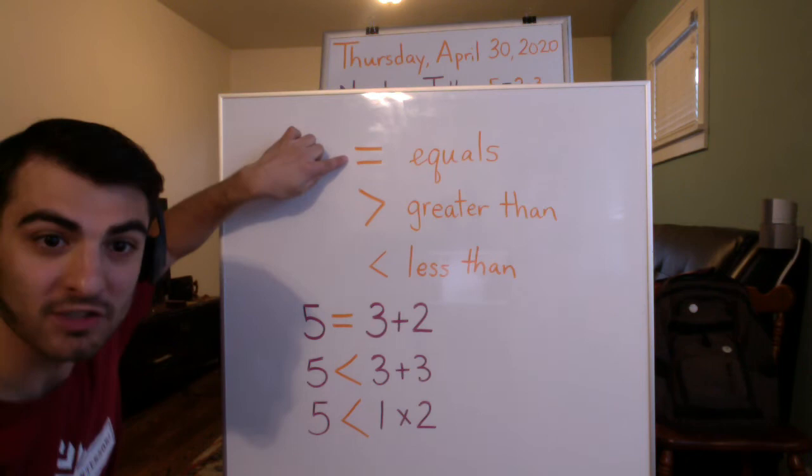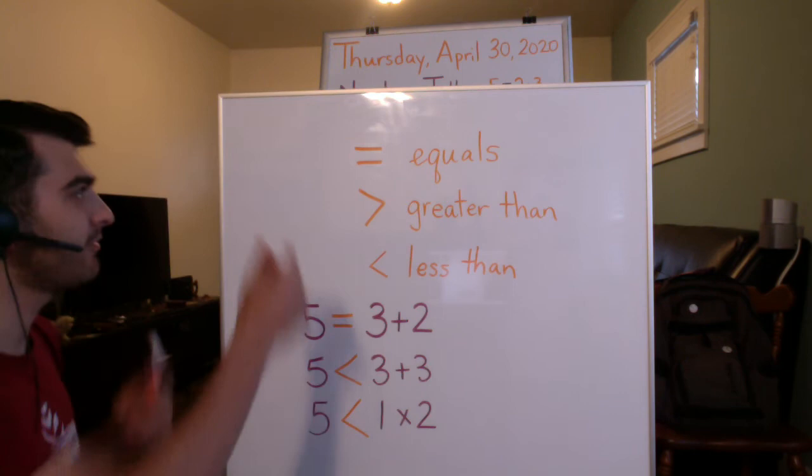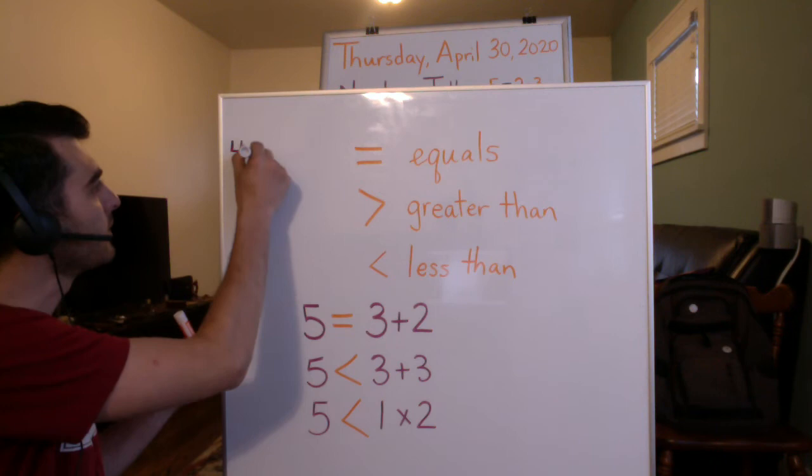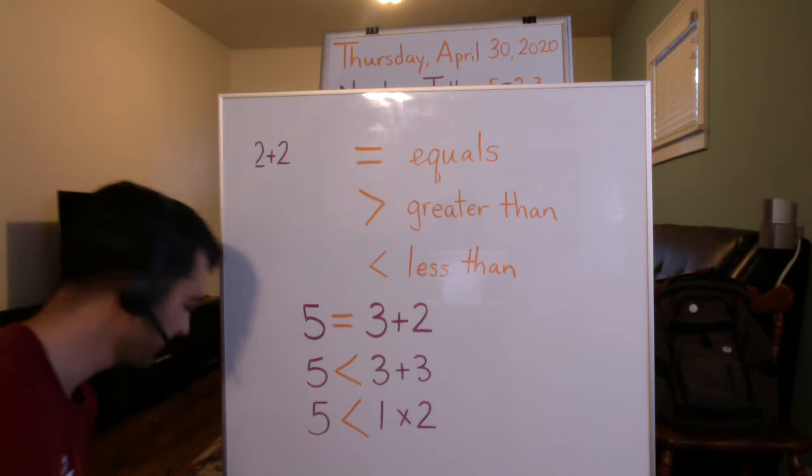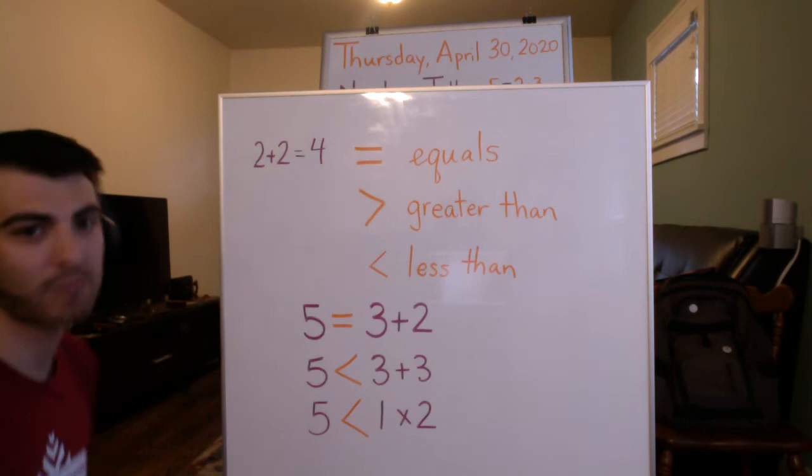You've all seen this one — this means equals. So you might see it if it were something like 4 equals 2 plus 2, or it could be the other way: 2 plus 2 equals 4. You've probably seen it this way more often. So here it means equals.